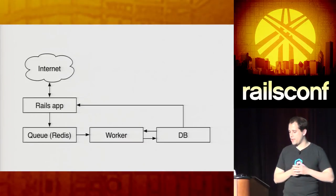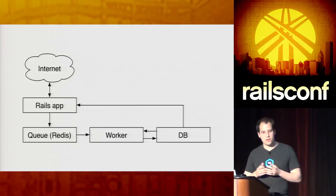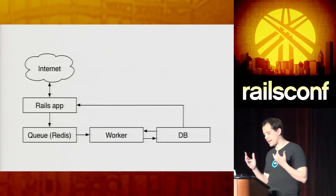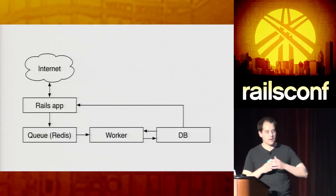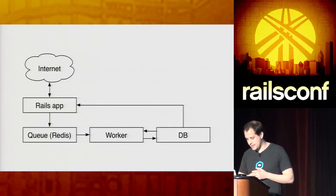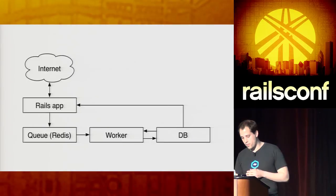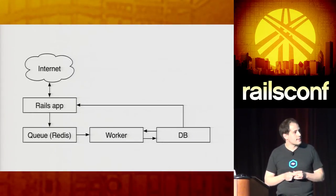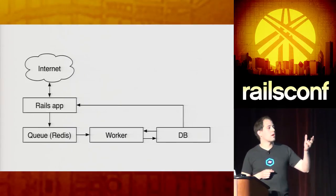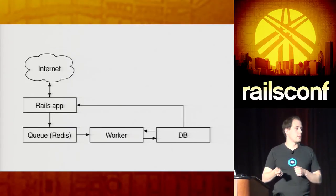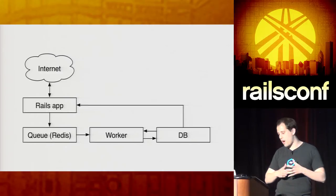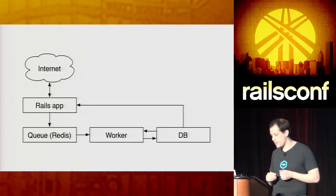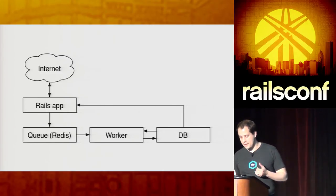Let's look at how one might implement this with Sidekiq or Resque — any simpler system that just pops off of a queue with workers. You've got your Rails app, it pushes data into Redis, and then the worker pops a message off Redis, reads state from the database, processes the message, writes state back out to the database, and then the Rails app can query the result by reading it straight from the database.